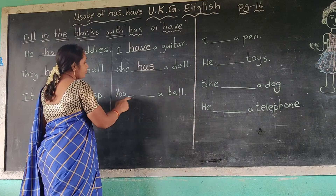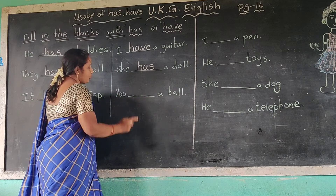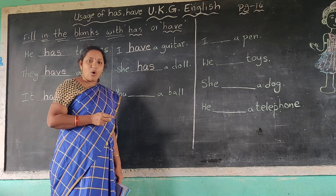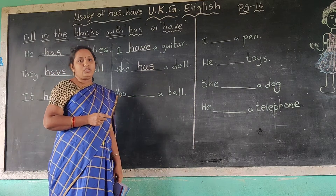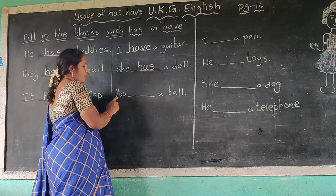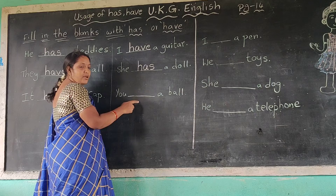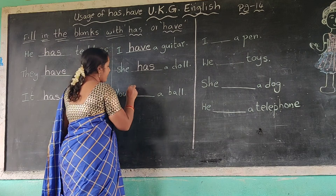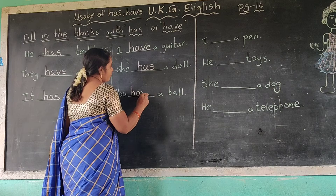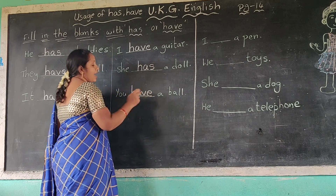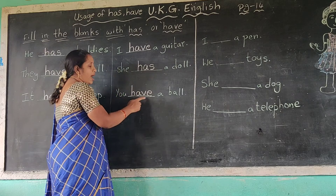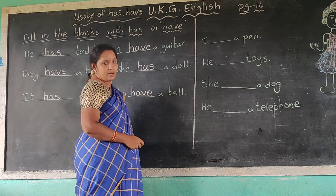Next one: you dash a ball. You — have. H-A-V-E. You have a ball. Write here, have, H-A-V-E. You have a ball.